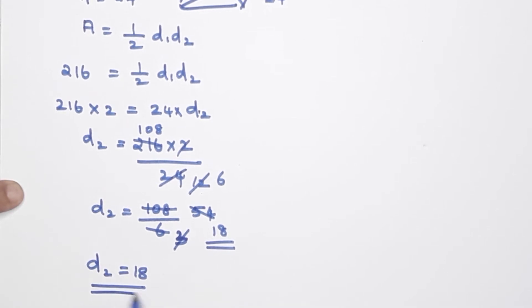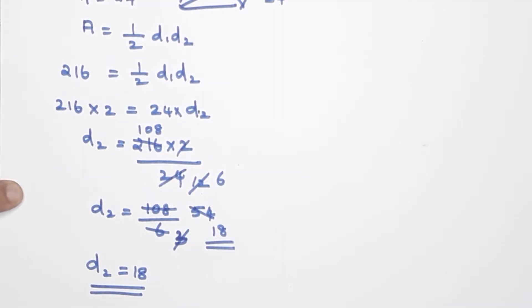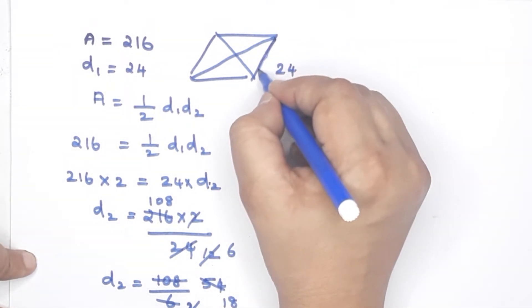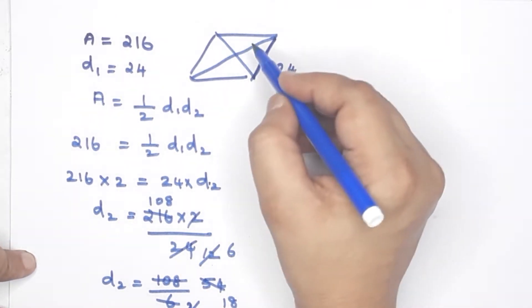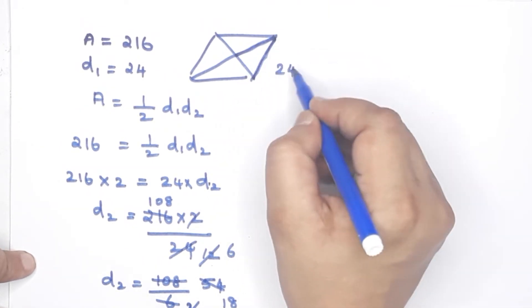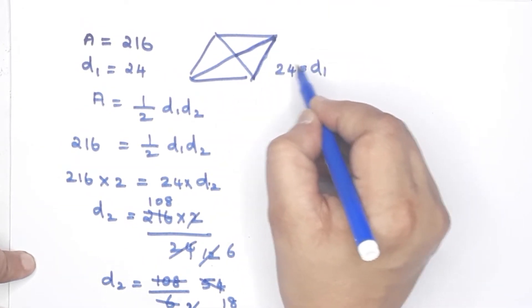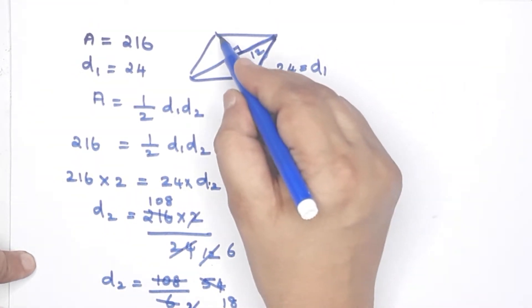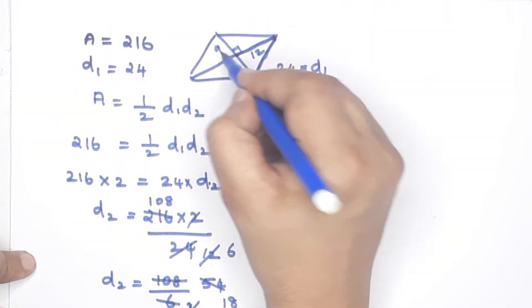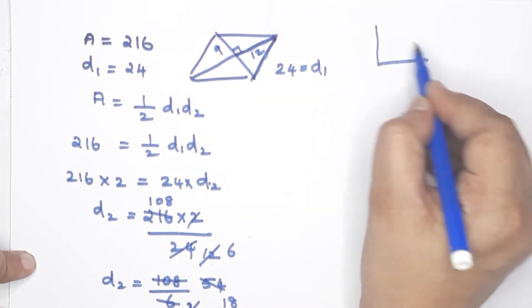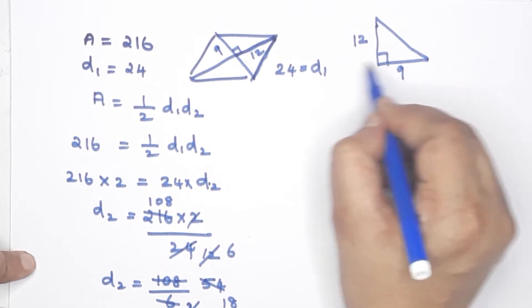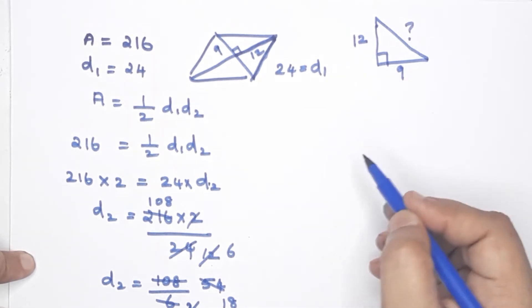So the first diagonal D1 is 24 and the second diagonal D2 is 18. Drawing the rhombus: one diagonal is 24, so half is 12; the other diagonal is 18, so half is 9. This triangle formed is a right angle triangle. We will apply the Pythagorean theorem to find the side.